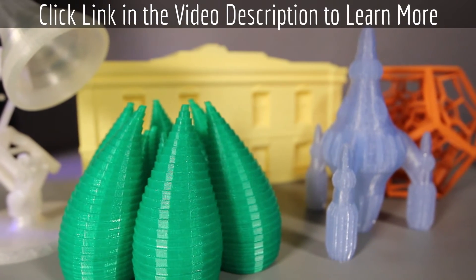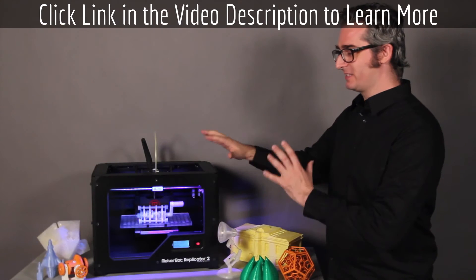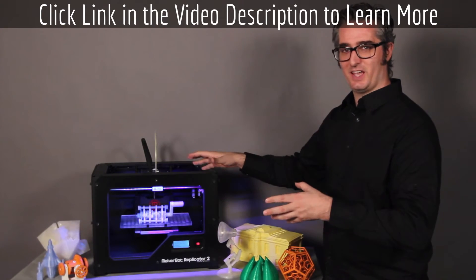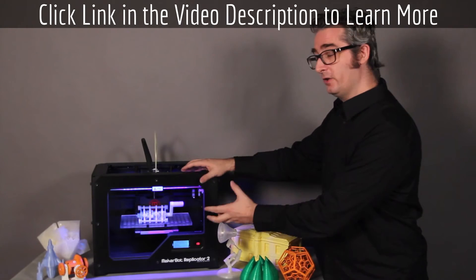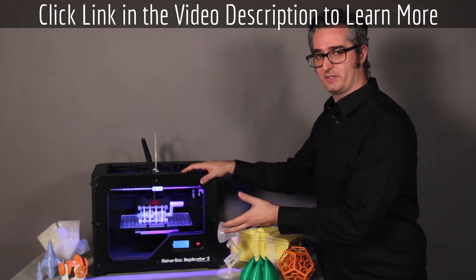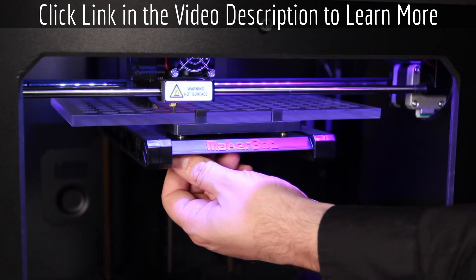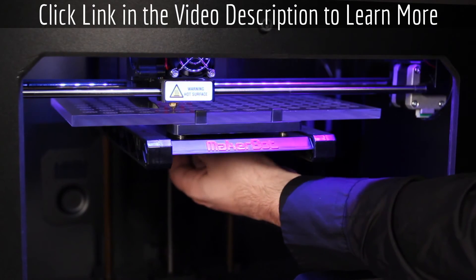The MakerBot Replicator 2 comes assembled, so you'll take it out of the box and you'll be making in minutes. It also comes equipped with a new, easy-to-use 3-point leveling system so that you can level your build platform quickly, easily and with more precision.